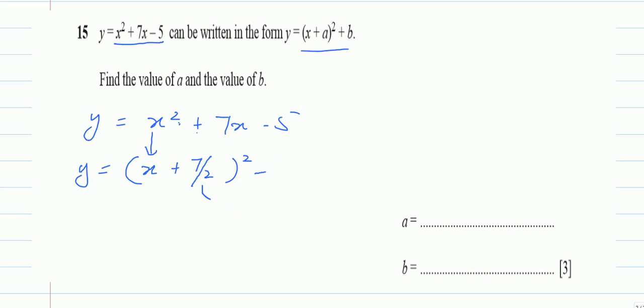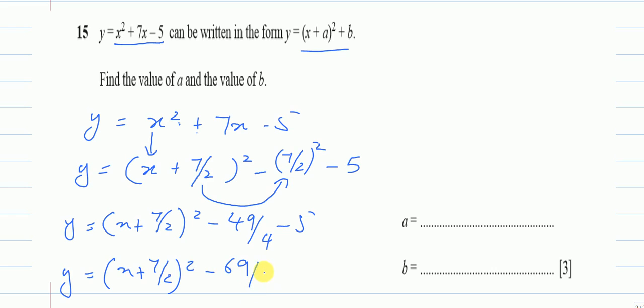Then I will always write a negative here, and I will also copy this number here, but I will write the square of this number. So it will be 7 over 2 squared. I will solve this equation: x plus 7 over 2 squared (you can write 3.5, it doesn't matter), and 7 over 2 squared gives 49 over 4 minus 5. Finally, I will have y equals x plus 7 over 2 squared minus 49 over 4 minus 5, which gives minus 69 over 4.